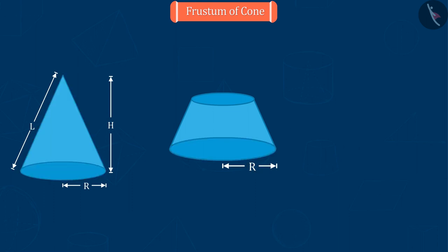If we represent the radius of the upper end as small r, the height of the frustum as small h, and the slant height as small l,